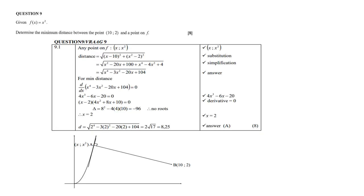Question 9. Given is that f of x is equal to x squared. Now you must determine the minimum distance between the point (10, 2) and any point on f.